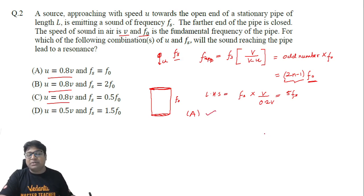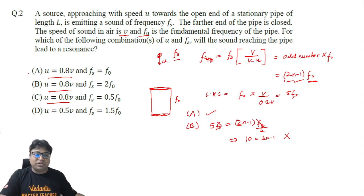Then for option B, if we check, the left hand side is still 5fs, and on the right hand side we will have (2n-1) times f_naught, where f_naught will become equal to fs by 2. Now this implies that fs will get cancelled and we are going to get 10 equals (2n-1). Now this is not correct - (2n-1) represents an odd number and 10 is an even number, so this is not correct. So option B is wrong.